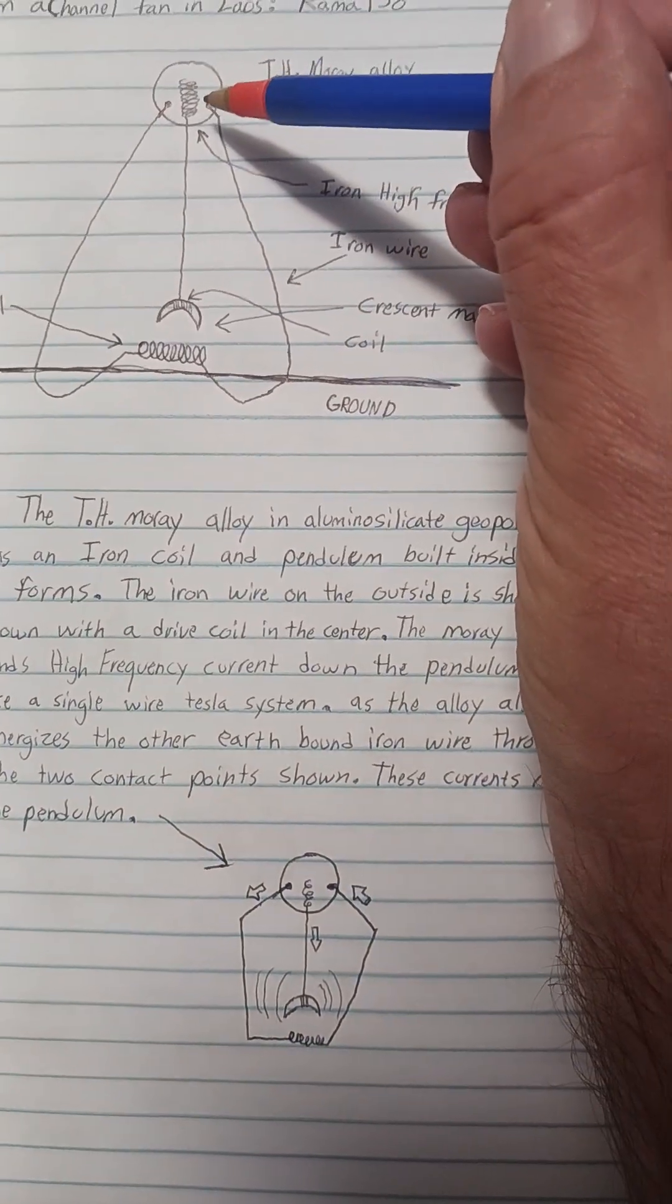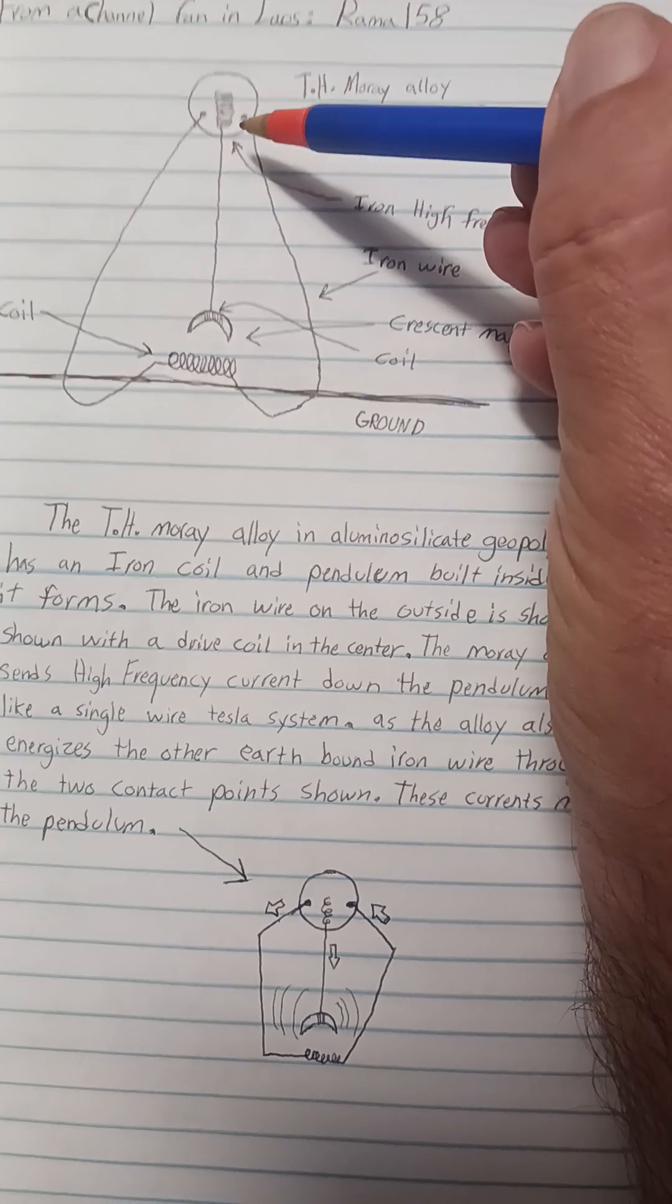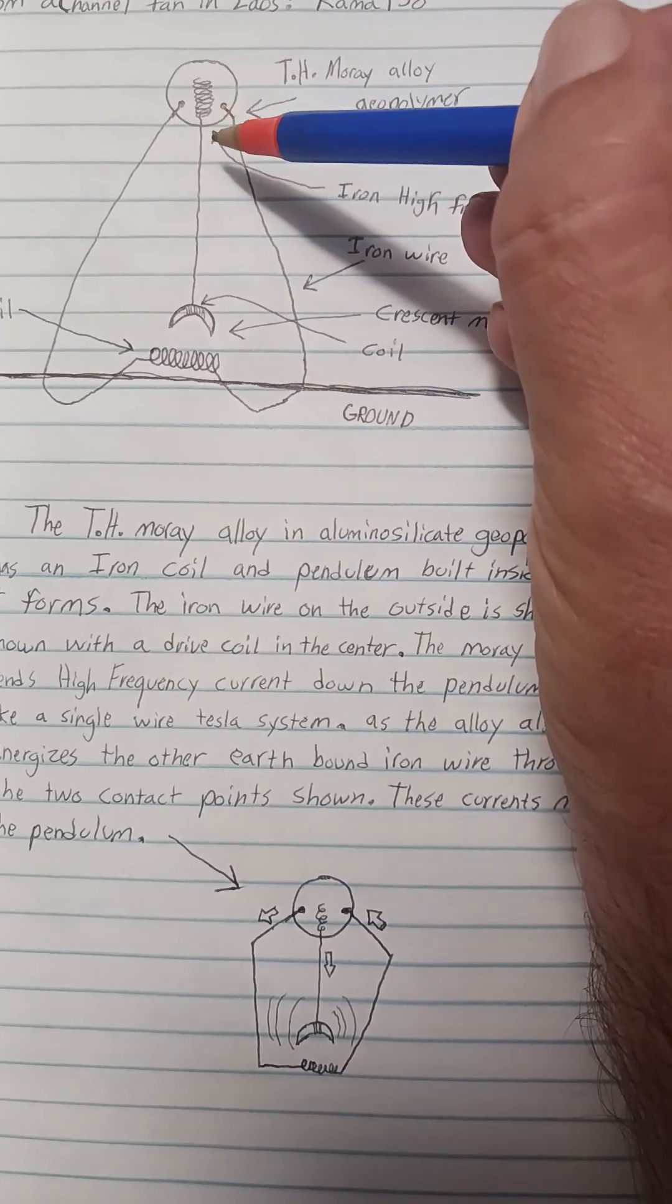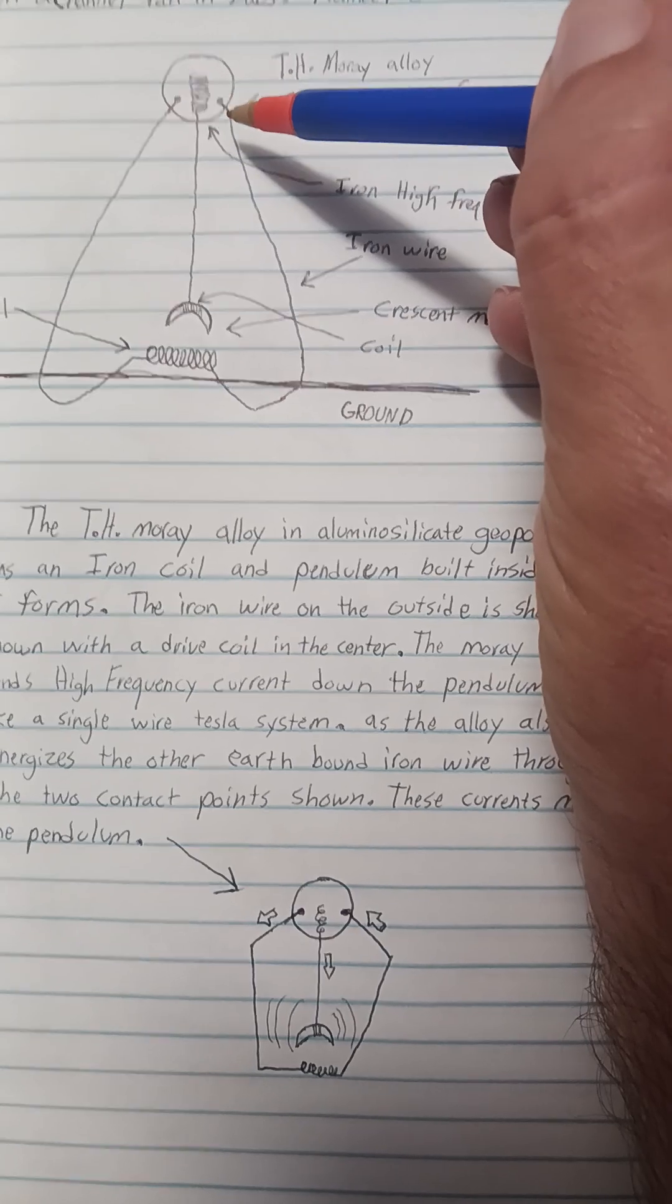The Mori alloy is put into a geopolymer, an aluminum silicate one. This allows you to put a coil inside the sphere.